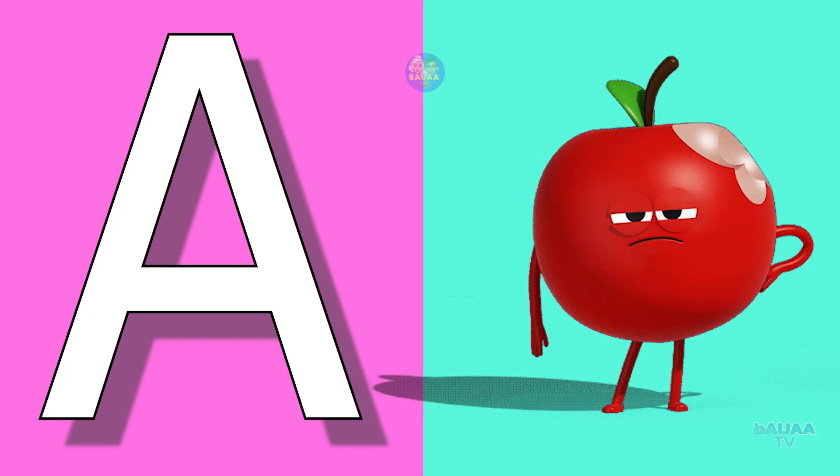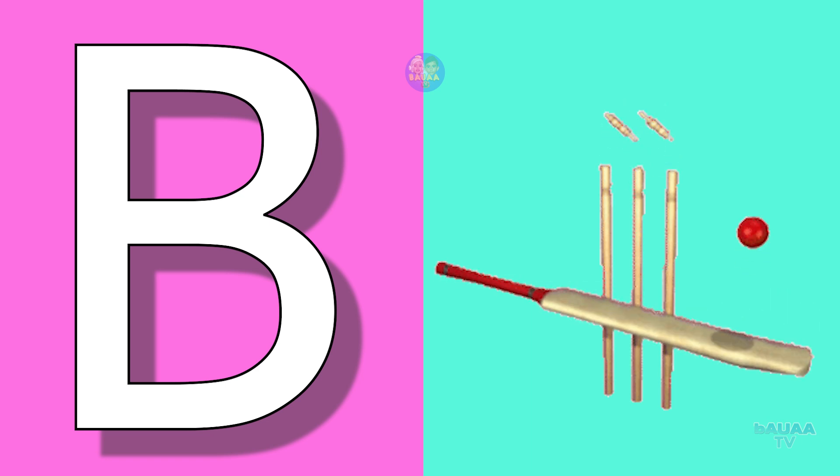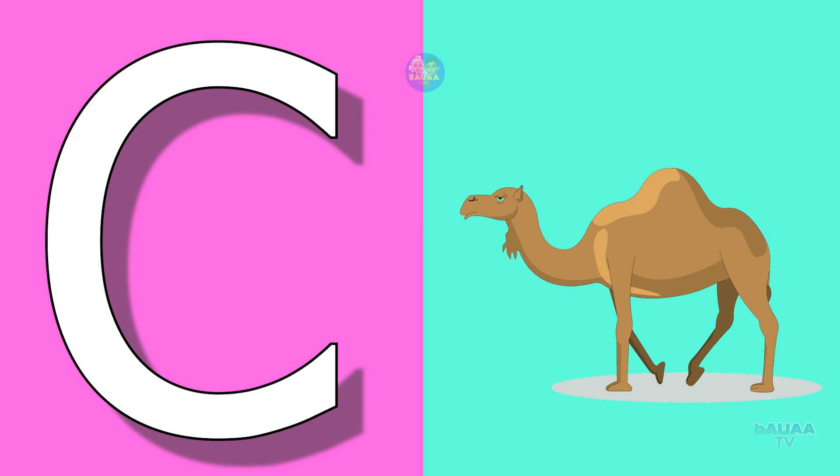A for apple, apple means save. B for bat, bat means balla. C for camel, camel means oot.